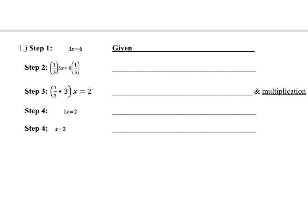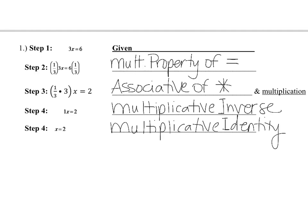Hopefully now that you've heard my explanation, you can do problem 1 without any help. Stop the video, try it, then come back to see if you did it right. From step 1 to step 2, I multiplied both sides of the equation by 1/3 — that's the multiplication property of equality. From step 2 to step 3, I did some multiplication. Then I put 1/3 in parentheses with 1/3 times 3 in parentheses. Asking you to group 1/3 and 3 together without changing order — that's the associative property of multiplication.